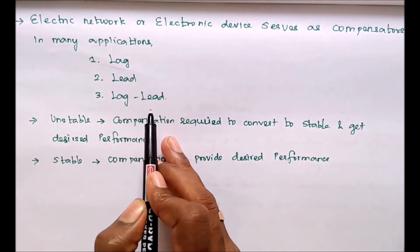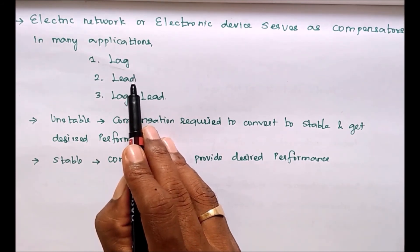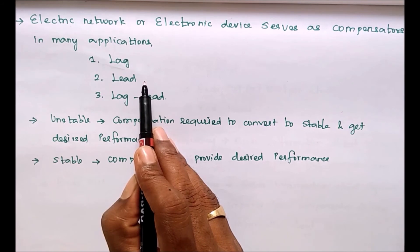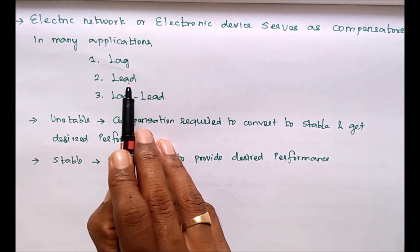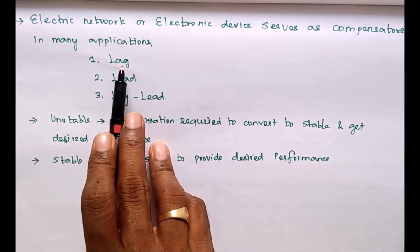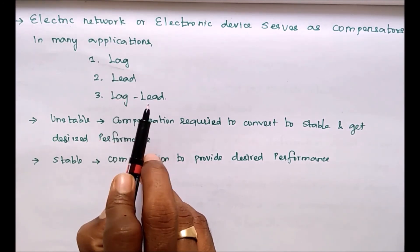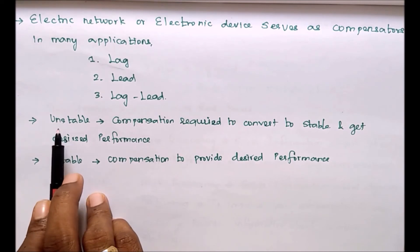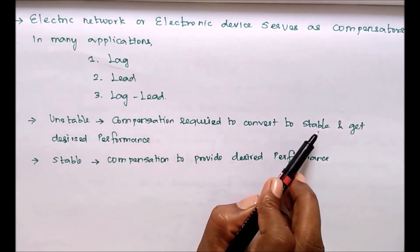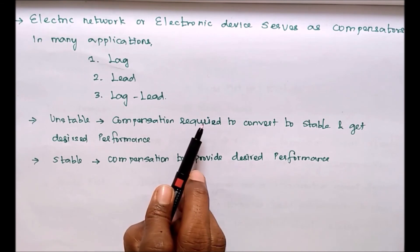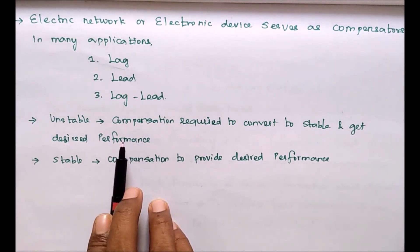In terms of phase angle: if we add a phase angle to the available system, that is called lead. If we subtract a phase angle, that is called lag. If we do both, that is called lag-lead compensation. We use compensation techniques to bring the system from an unstable to a stable region.